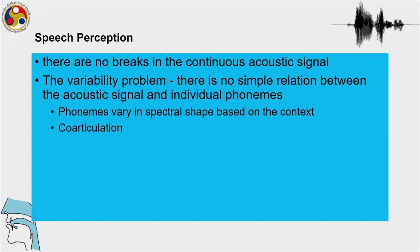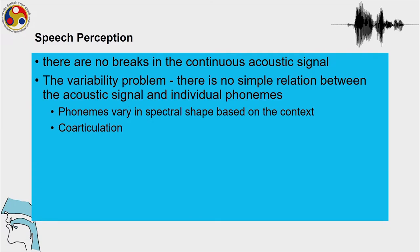When it comes to speech perception, an important aspect of the acoustic signal is that there are no breaks in the continuous acoustic signal. Whenever we say a sentence, we are not particularly paying attention to giving breaks between words — we speak everything in one go. Unless there are prosodic aspects to be taken care of, we are not really paying attention to the boundaries between words. This creates what is known as the variability problem.